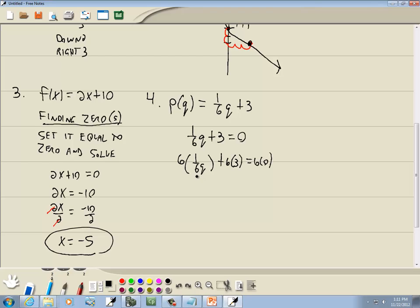So we'll take 1/6 times, or 6 times 1/6q. The 6s cancel. And we've got q. 6 times 3, which gives us 18. And 6 times 0, which gives us 0. Now take the 18 to the right side. Then it becomes a negative 18. And that's our zero.